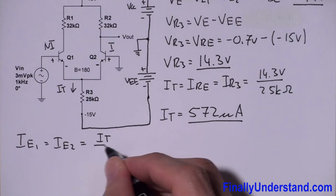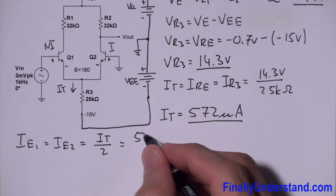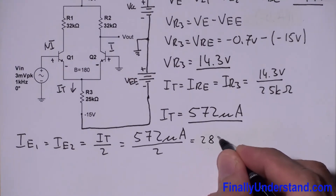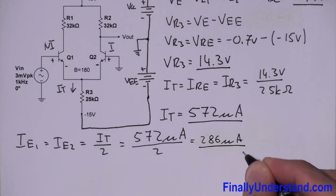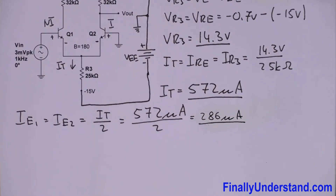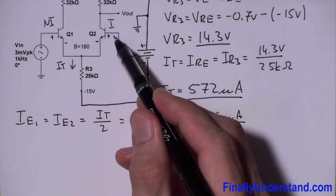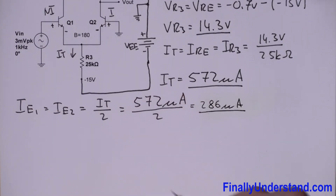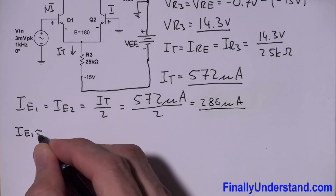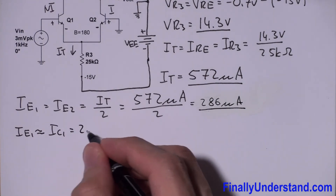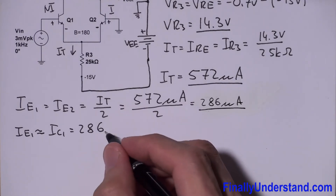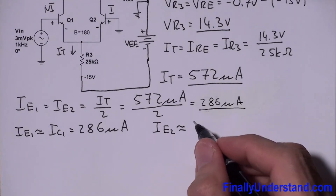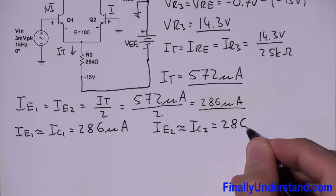IE1 equals IE2 equals IT divided by 2, which is 572 microamps divided by 2, giving 286 microamps each. Since the DC base current through each transistor is small compared to IC and IE, we can say IE1 is approximately equal to IC1, and IE2 is approximately equal to IC2, both equal to 286 microamps.